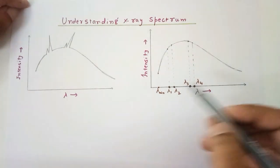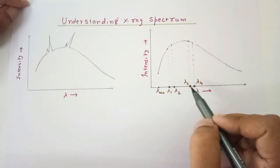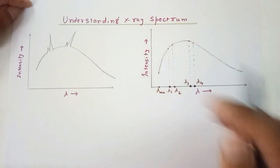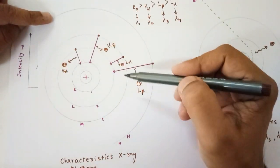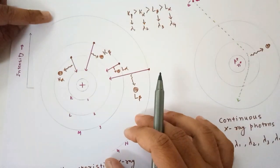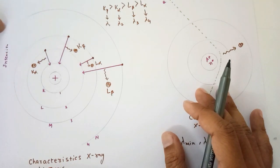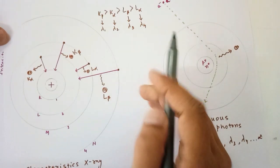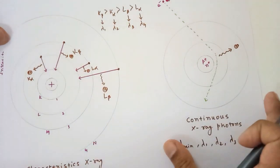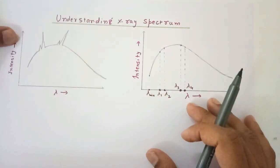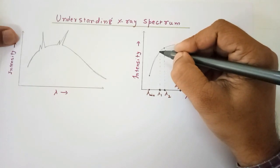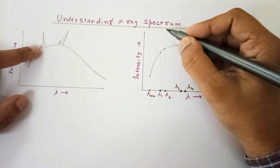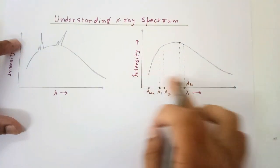In the continuous X-rays, photons with wavelengths lambda 1, lambda 2, lambda 3, and lambda 4 were already present. But now, due to the characteristic X-rays — from electron transitions producing K-alpha, K-beta, L-alpha, and L-beta — we have more photons at exactly those wavelengths. This means there are more photons corresponding to those wavelengths, producing sharp peaks in the spectrum at lambda 1, lambda 2, lambda 3, and lambda 4.